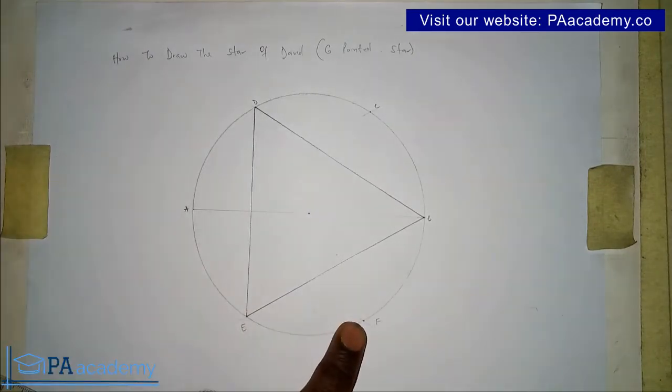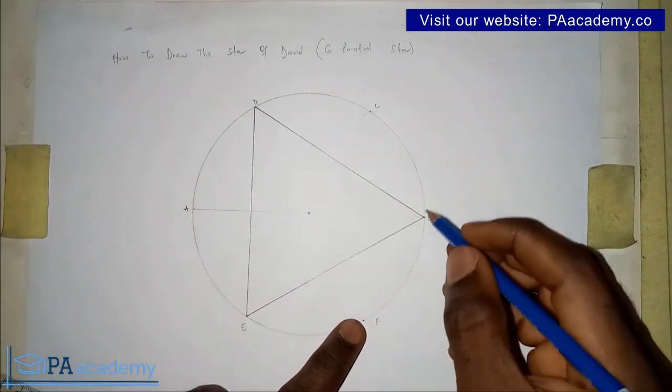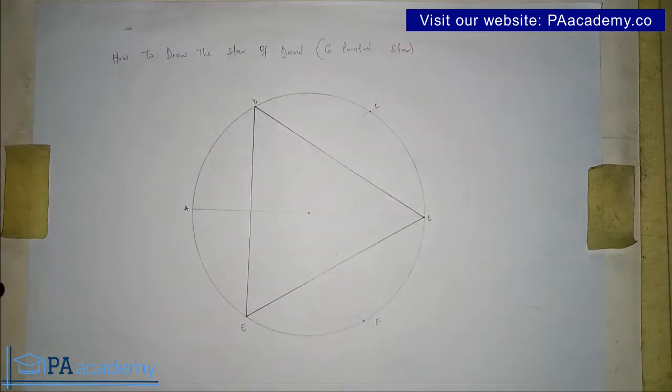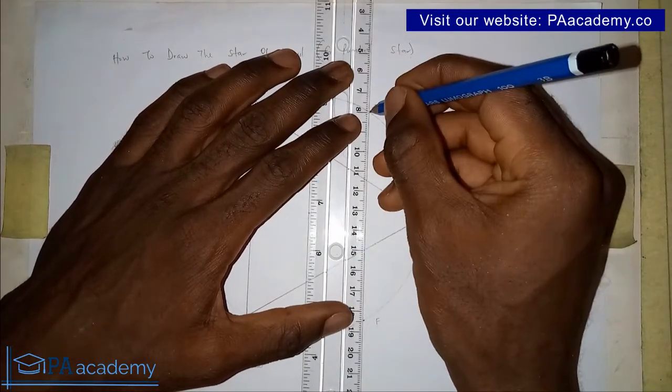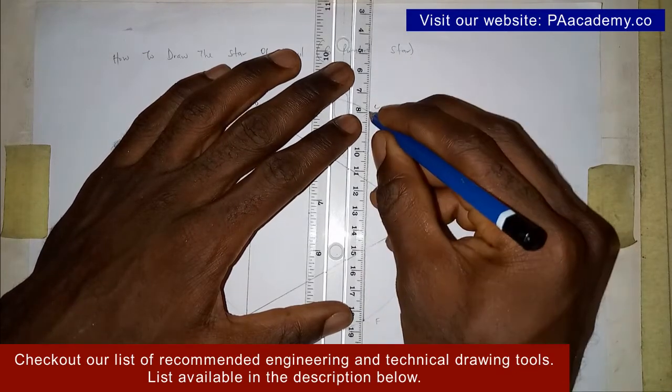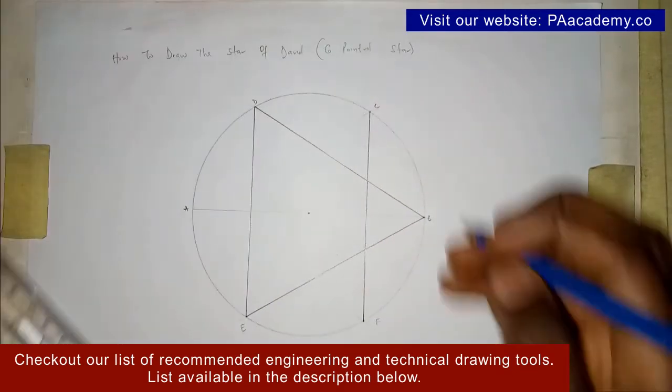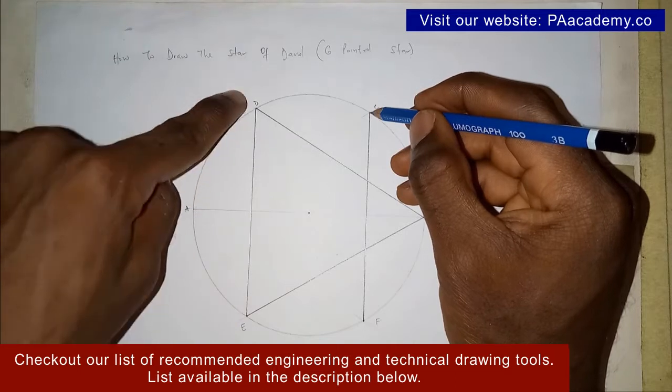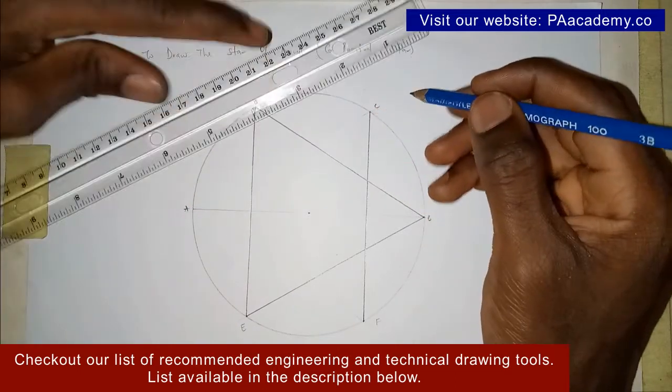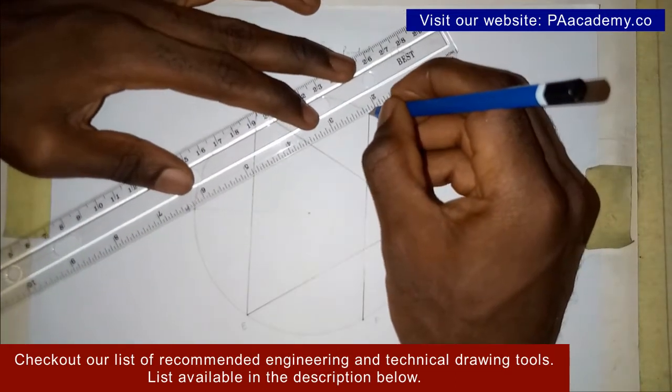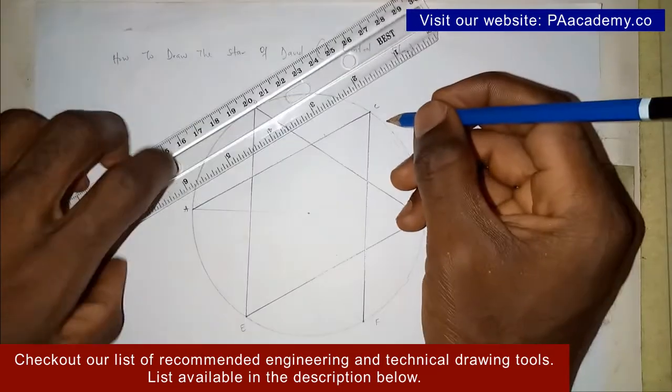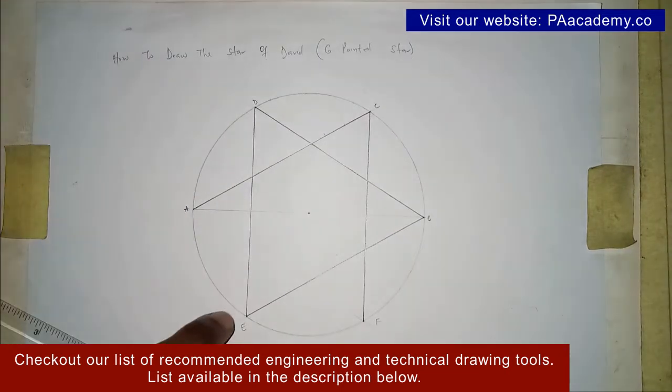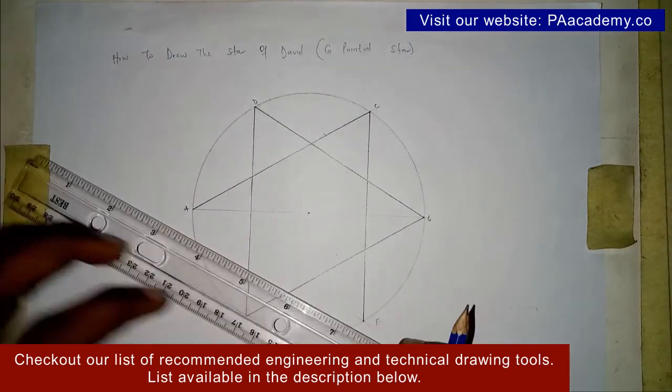Now we are going to repeat the same process, starting from point F. From point F, you skip point B and draw a line to point C. That will give us something like this. Then from point C, you skip point D and draw a line to point A. And finally, from point A, you skip point E and draw a line to point F.